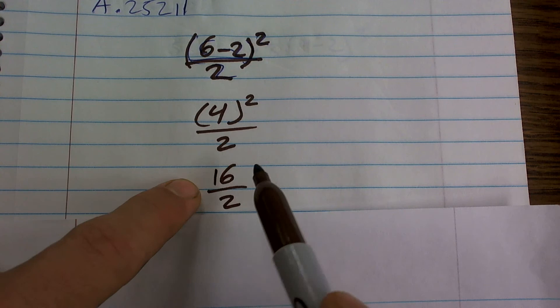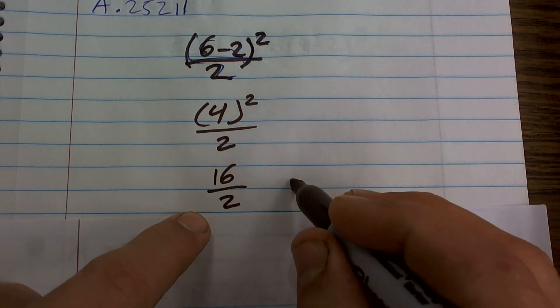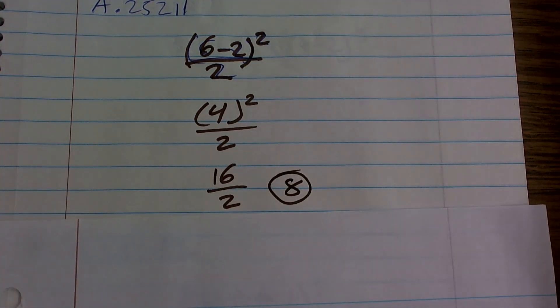So that's why I did 4 squared, which is 16. 16 divided by 2, which is 8, which is your final answer.